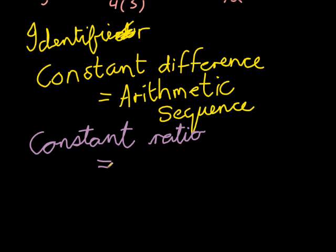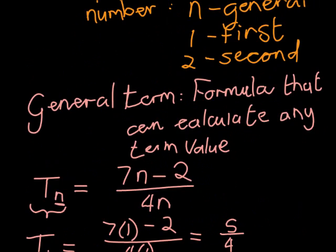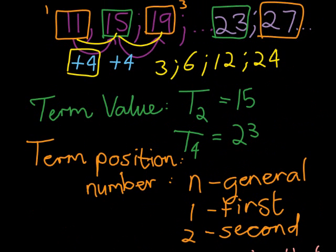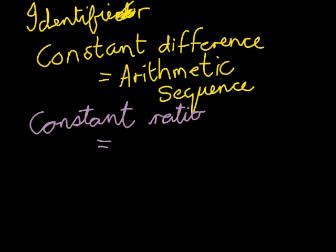The second type has a constant ratio. In the example 3, 6, 12, 24, dividing consecutive terms gives 2 each time. This is called a geometric sequence.